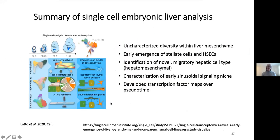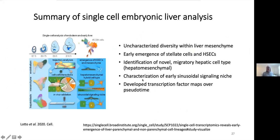In summary for the liver: we showed that there's uncharacterized diversity within liver mesenchyme. We saw the early emergence of stellate cells and the hepatic sinusoidal endothelial cells. We were able to identify a novel migratory hepatic cell type — the hepatomesenchymal cells — and we were able to characterize some of the sinusoidal niche.